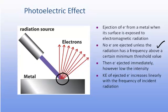Then once that minimum energy was achieved, the electrons were ejected immediately, however low the intensity. Further, the kinetic energy of the electrons increased linearly with the frequency of incident radiation.